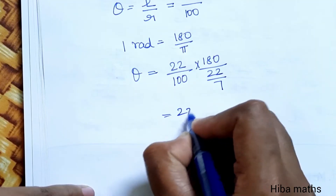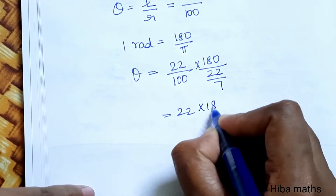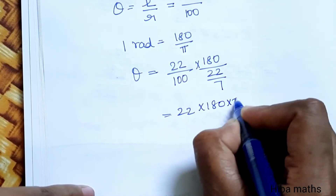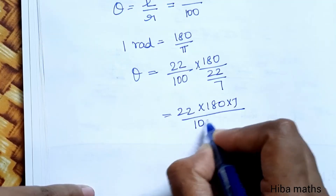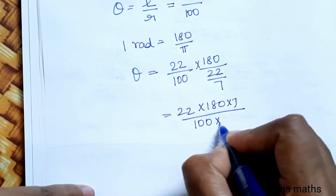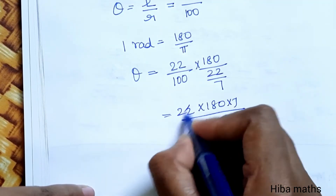In the next line, substituting the value of pi as 22 by 7, we get 22 by 100 multiplied by 180 into 7 divided by 22, which gives 180 into 7 divided by 100.